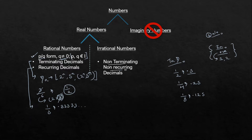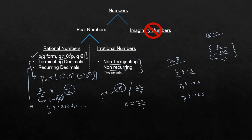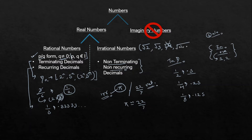Irrational numbers are non-terminating and non-recurring — numbers that do not terminate and do not repeat in a cyclic manner. One of the finest examples is pi. Remember that pi and 22/7 are two different numbers: pi is an irrational number, while 22/7 is a rational number — 22/7 is only an approximate value of pi. This has been asked in CAT in a past year. Other irrational numbers include √2, √3, but note that √4 = 2, which is rational. The square root of any non-perfect square is irrational, so √8 and 2√3 are irrational.